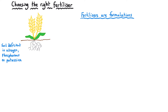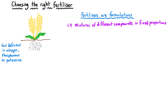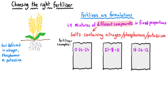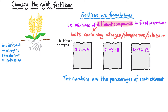The fertilisers that we buy are actually formulations, meaning they are mixtures of different compounds in fixed proportions. Those compounds are various salts — for instance the ones mentioned earlier — that have got nitrogen, phosphorus, and potassium in them. There's a huge variety of fertilisers and they all list the percentages of the elements within them. For example, a label reading 0, 24, 24 means the fertiliser has no nitrogen but 24% phosphorus and 24% potassium.